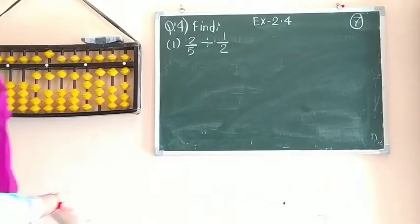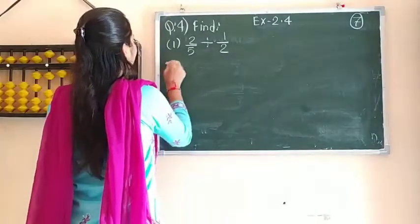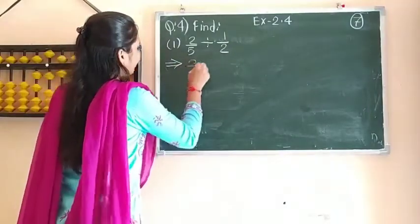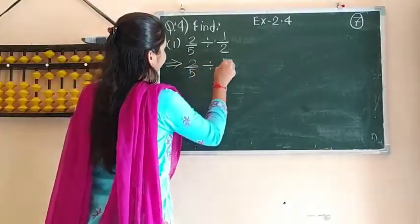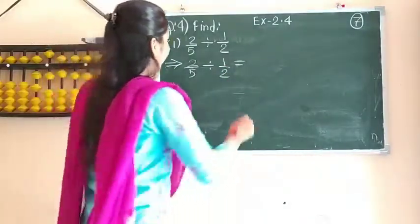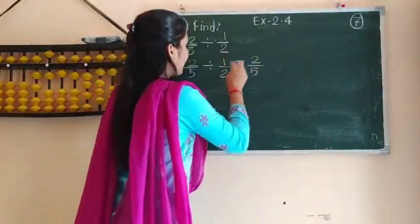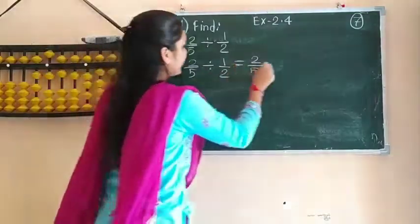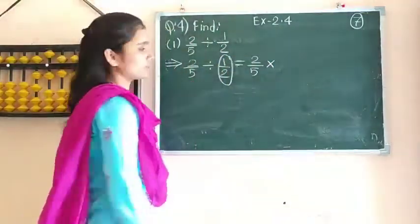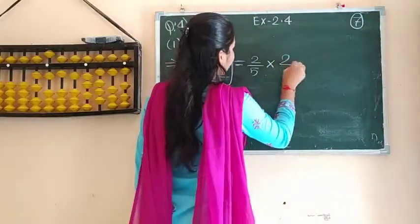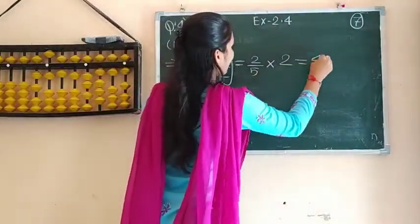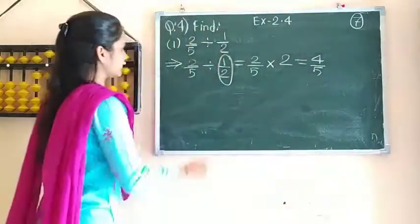Now question 4 — you have to find the value. Given is 2 by 5 divided by 1 by 2. As I told you before, whenever such a question comes, replace the division sign with a multiplication sign and make the reciprocal of the second fraction. So 1 by 2 becomes 2 upon 1, giving us 4 upon 5 as the answer.